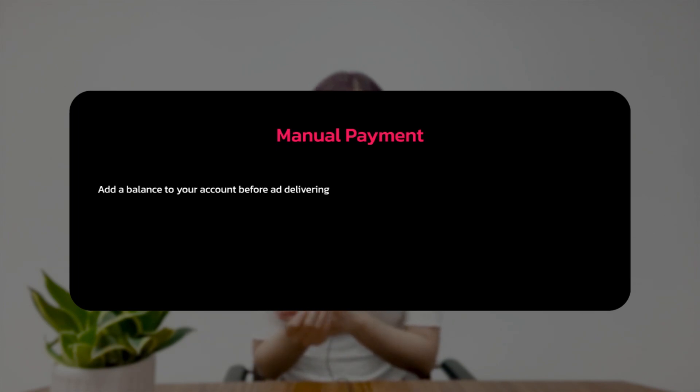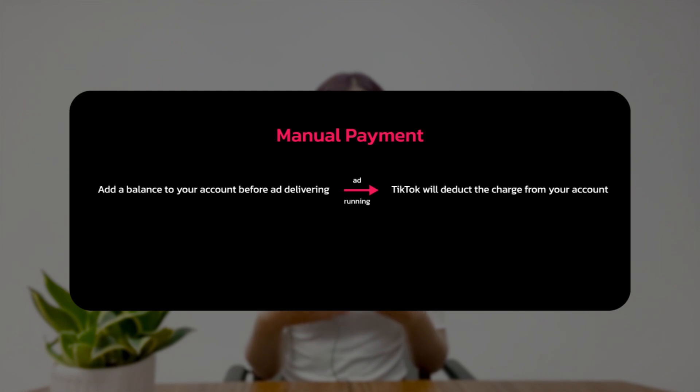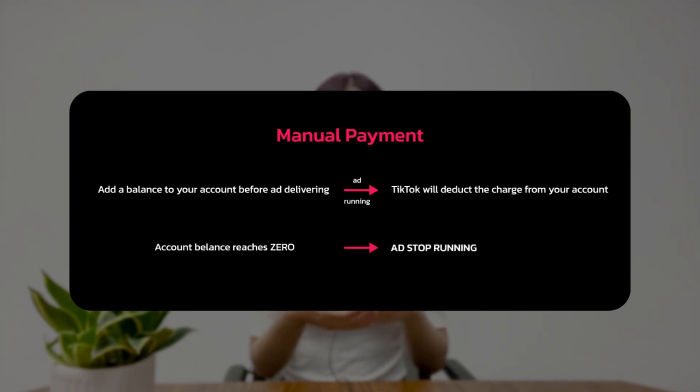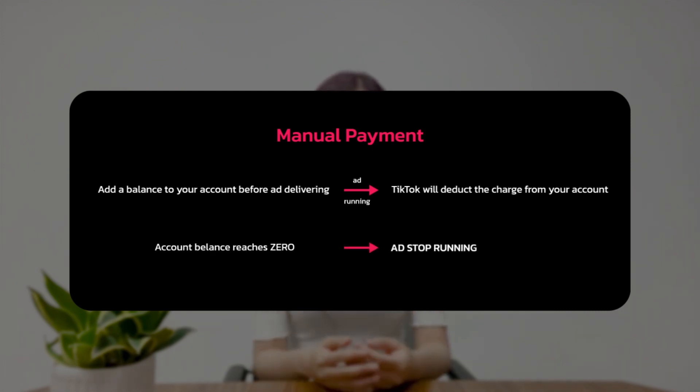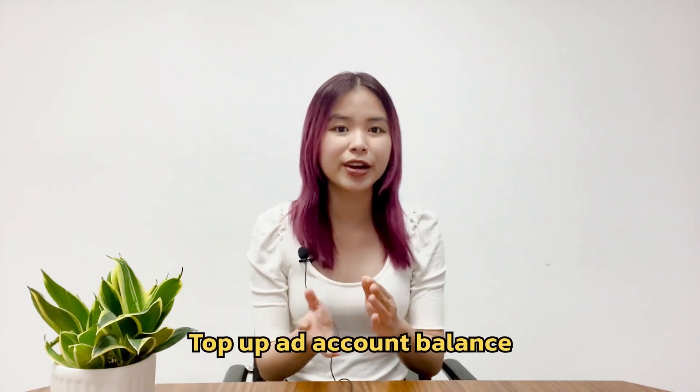First, if you're using manual payment, the reason might be related to your ad account balance. With this payment method, you need to add a balance to your account before your ads can deliver. As your ads run, TikTok will automatically deduct charges from your balance, and your ads will stop running when the balance reaches zero. In this case, the only thing you need to do is top up your account balance.